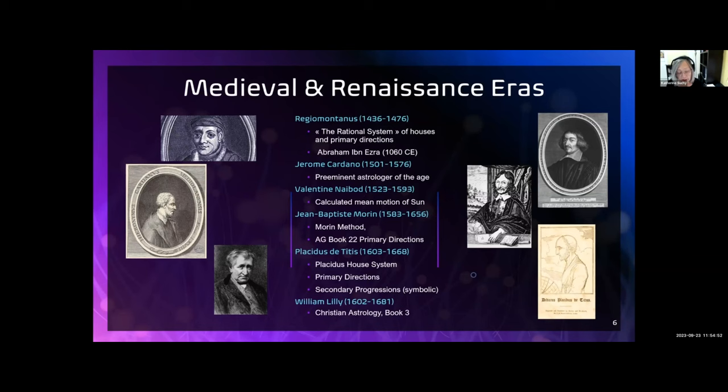William Lilly was an English astrologer with considerable political and social influence. He wrote Christian Astrology, a three-volume discourse on traditional astrology. One full section of book three is on directions. Placidus was an Italian astrologer, best known for his house system, and the primary directions that he put together that were based on Ptolemy's. He created secondary progressions, which is a symbolic method of forecasting.